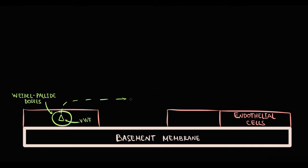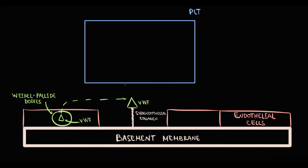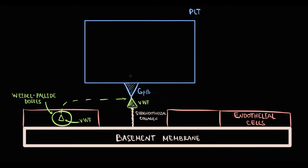In the bloodstream, von Willebrand factor binds to subendothelial collagen under the disrupted endothelial cell. After that, platelets come to the site of injury and by the specific receptor GP1B they bind to von Willebrand factor. And exactly this simple step is called platelet adhesion.